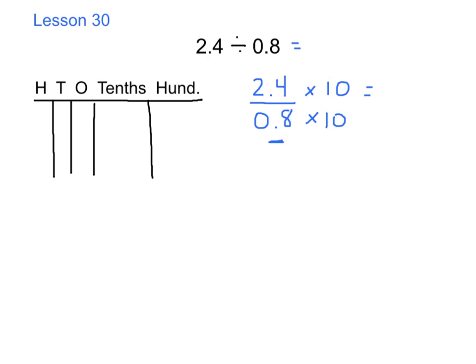2 and 4 tenths times 10 is 24. If you forgot how we got that, back in Module 1 we learned how to use a place value chart. I'm going to put 2 and 4 tenths on my place value chart. When we multiply, we shift numbers to the left. Since I'm only multiplying by 10, I shift one place to the left — moving the 4 and the 2 — giving us 24, which matches my numerator.